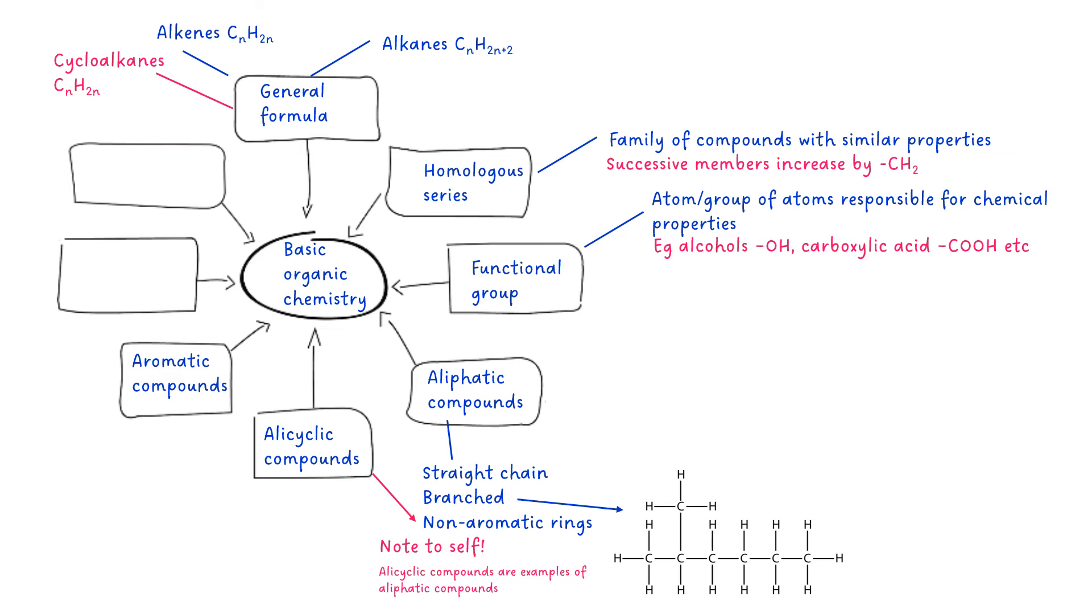I'm going to create some space because now I think maybe put some examples in of what a branched compound looks like, what a straight chain compound looks like, what an alicyclic compound looks like, and what an aromatic compound looks like.